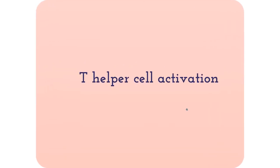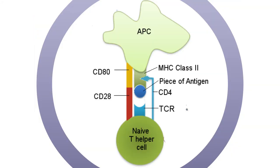Now let's talk about T helper cell activation. T helper cells are used for extracellular antigens. To be activated, they must interact with an antigen-presenting cell presenting antigen pieces with an MHC class II molecule. The helper T cell uses its TCR and the CD4 marker to recognize the antigen and MHC on the APC. T helper cells require a second signal to be activated as well: the CD28 marker on the T cell must recognize CD80 on the APC. Once both recognitions are achieved, the T cell can become active.